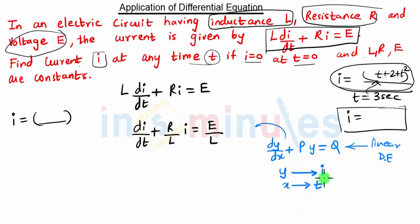If we replace y by i and x by t, we get this equation where P is R/L and Q is E/L. These are our P and Q. For this equation, first we find the integrating factor.